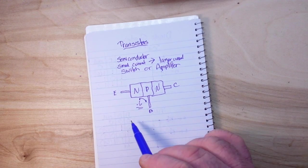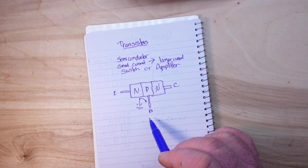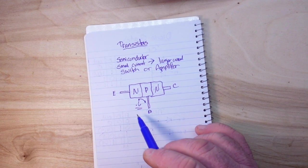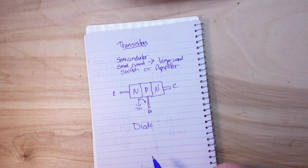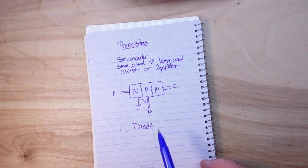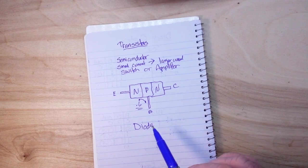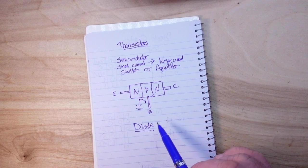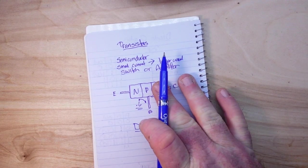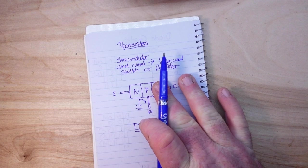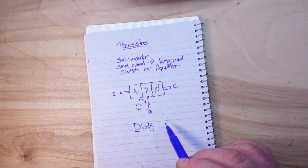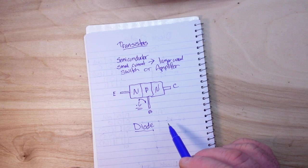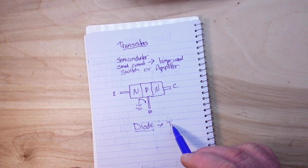A PN junction, a voltage drop - what are we talking about here? Well, it's basically a diode. So the simplest semiconductor is the diode, the NP junction or the PN junction. Add another PN junction to our diode and we have a transistor.